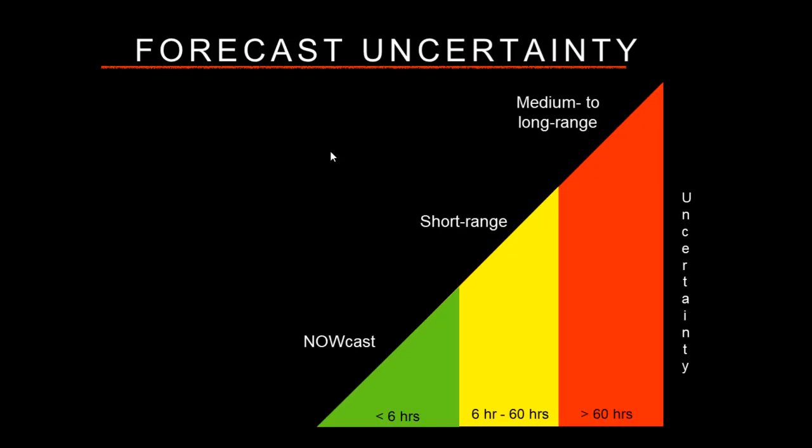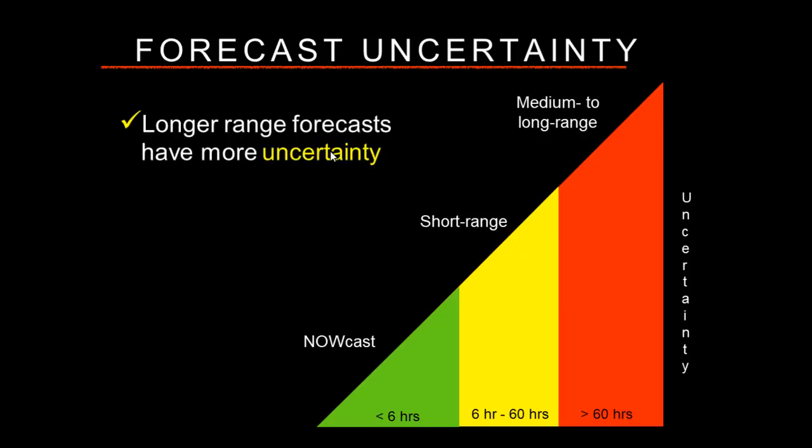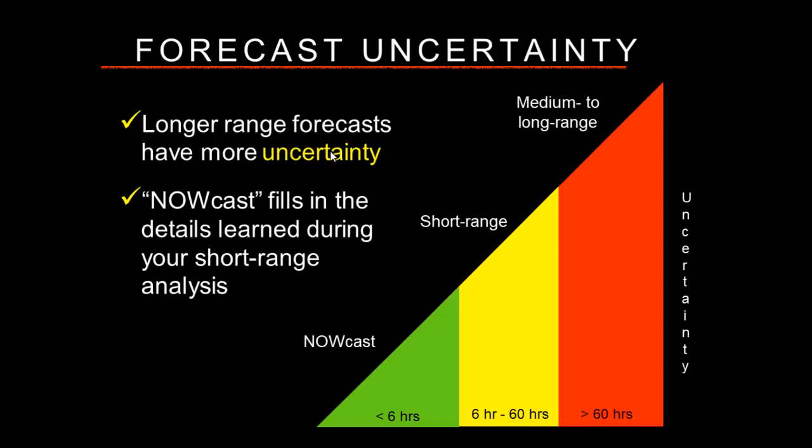It's important to understand that weather forecasts are not black or white — it's all shades of gray. We're dealing with uncertainty. Longer-range forecasts — three, four, or five days out — are going to have a lot more uncertainty. As you get closer to your time of departure, the now-cast fills in the bottom-of-the-funnel details that you identified in your short-range forecast.